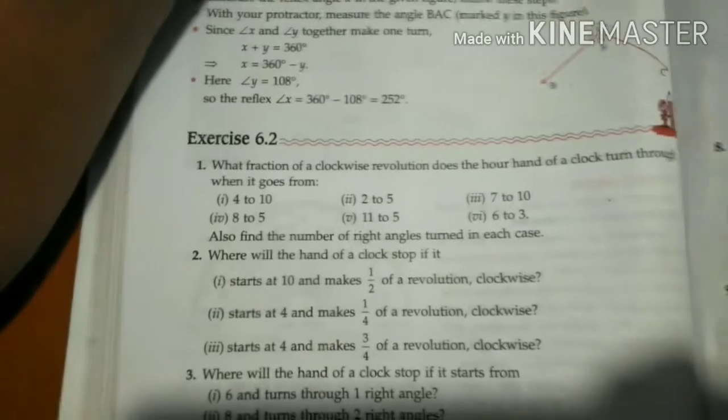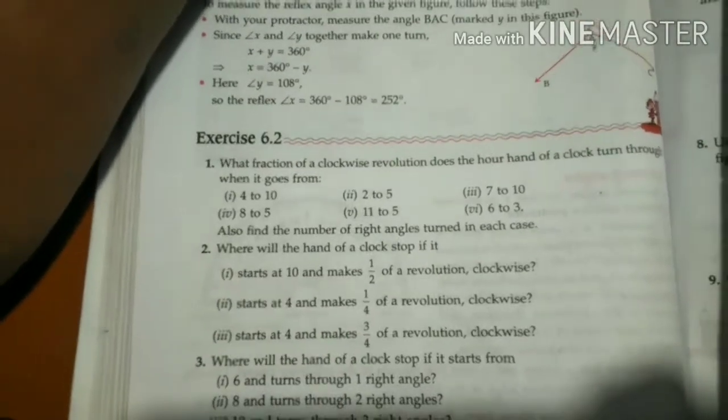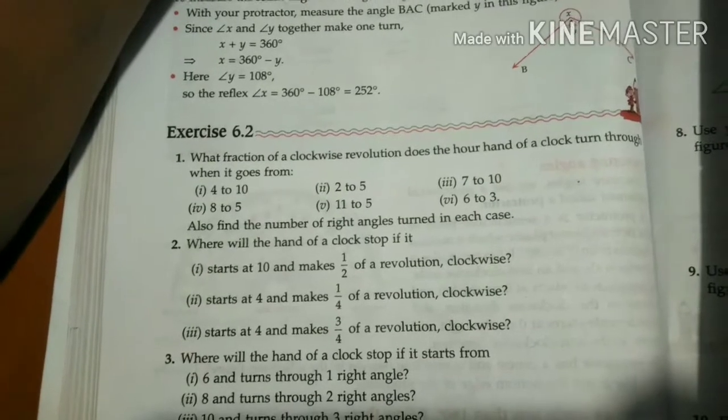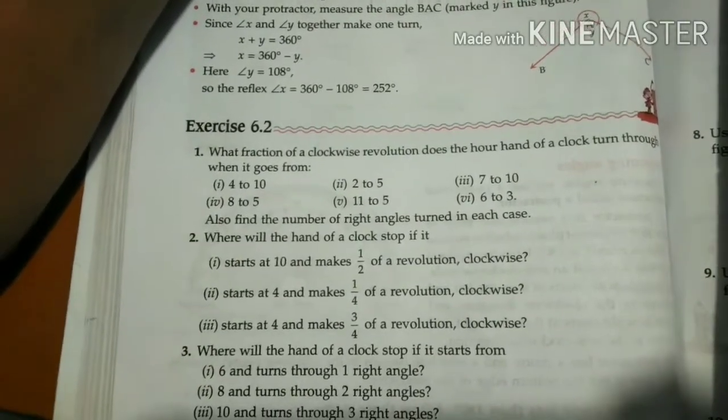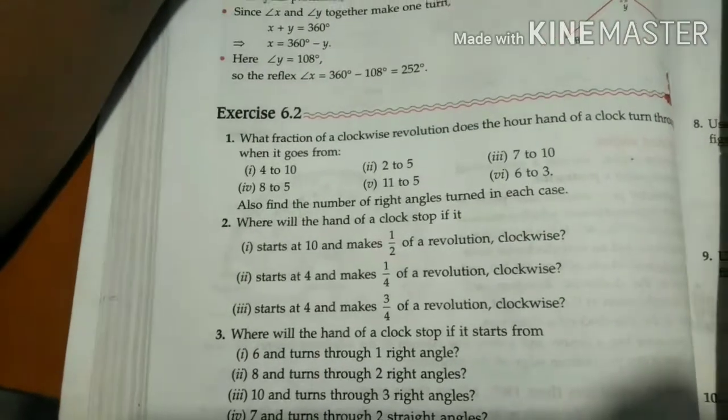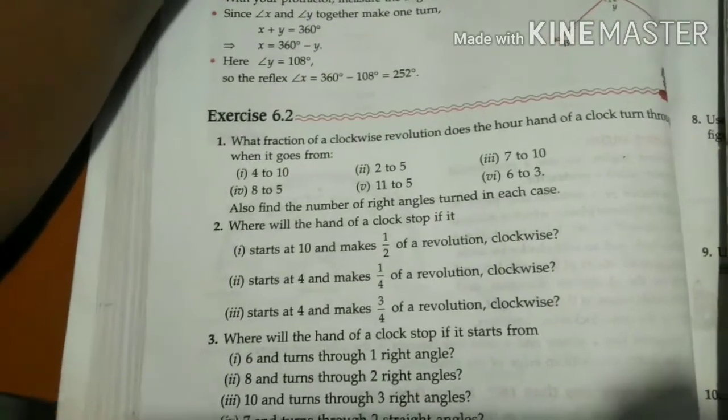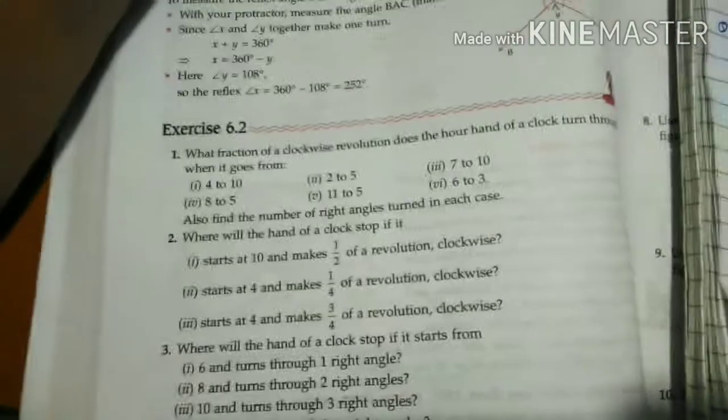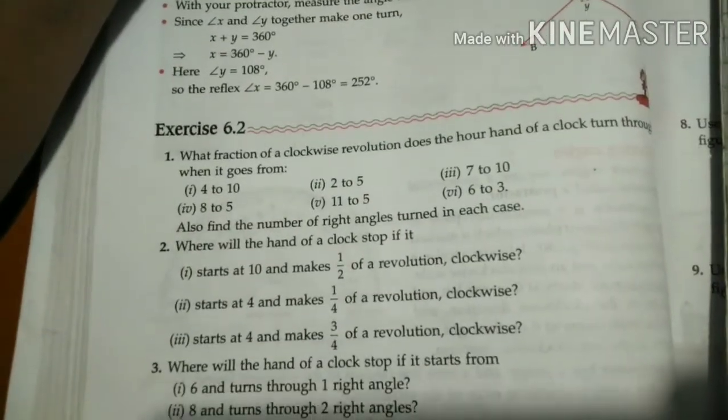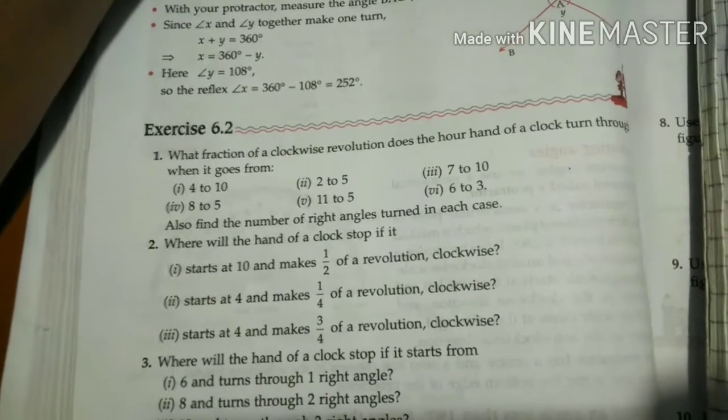Dear students, first of all, very nice good morning to all of you. Today I am going to teach you Exercise 6.2. The first question: what fraction of a clock revolution does the hour hand of a clock turn when it goes from 4 to 10?